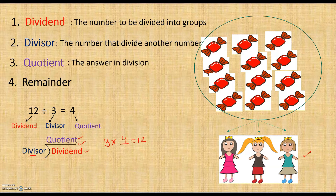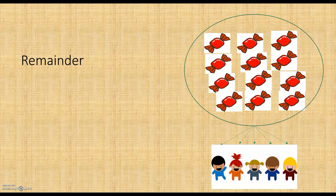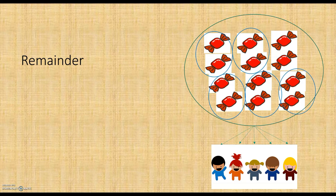Here I have 12 chocolates. This time I want to distribute them equally among 5 children, meaning we want to make 5 groups. So let's distribute — this is the 1st group, then the 2nd group, then the 3rd group, then the 4th group, then the 5th group. Now 2 chocolates are left, and we can't distribute these 2 chocolates among 5 children.